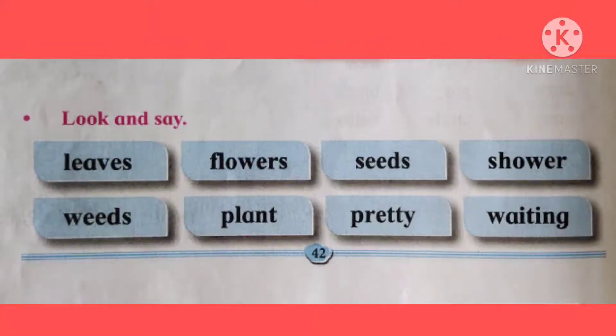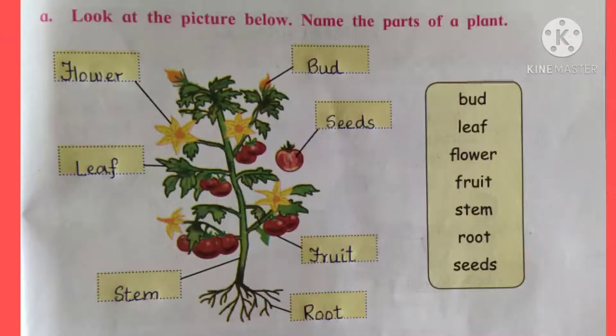Now, look at this picture. This picture is of a plant. You have to name the parts of the plant in the English Balbharati book on page 43.